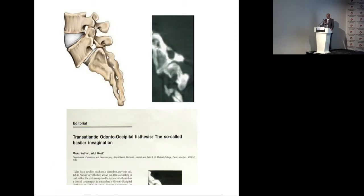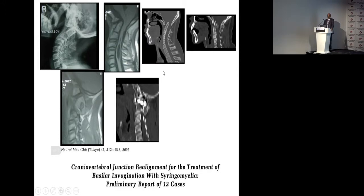The concept we introduced was that in these cases there is listhesis of C1 over C2 — distract and reduce the listhesis, that was the treatment. We still described that there was an entity requiring foramen magnum decompression in 2004 Group B. In 2005, we identified cases of Chiari malformation and syringomyelia where there was listhesis of C1 over C2, and we described craniovertebral junction realignment as the treatment, saying foramen magnum decompression is not necessary.